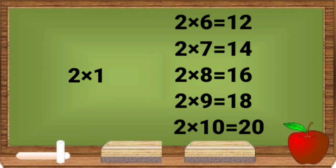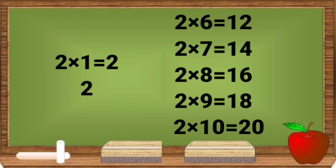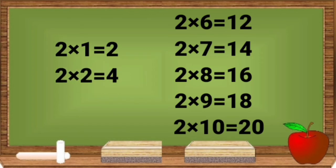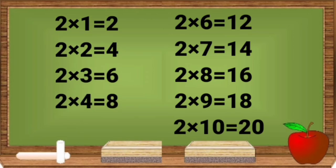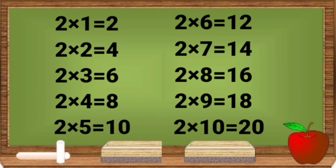2 ones are 2. 2 twos are 4. 2 threes are 6. 2 fours are 8. 2 fives are 10.